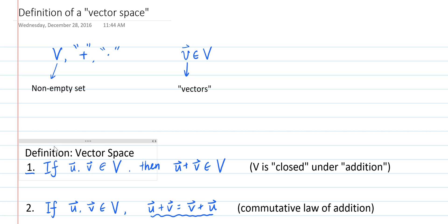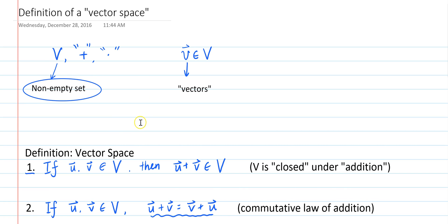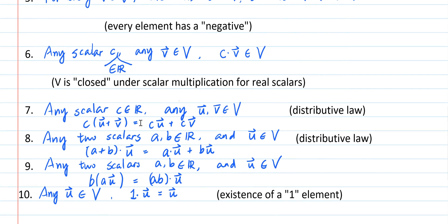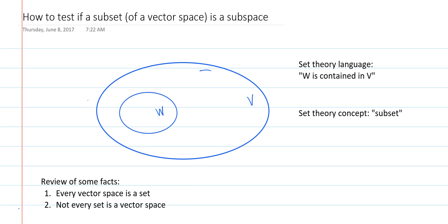For a set to be a vector space, it needs to be non-empty, and it needs to satisfy these ten axioms that we went over in the definition of a vector space. Likewise, a vector space V may have many different subsets, but not all subsets of V are going to be subspaces of V. Only those subsets that are themselves vector spaces are subspaces of V.